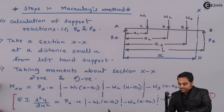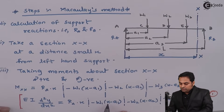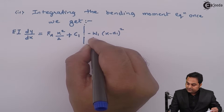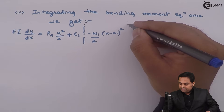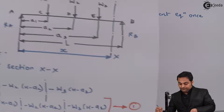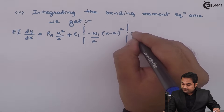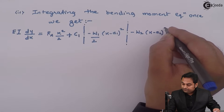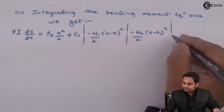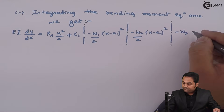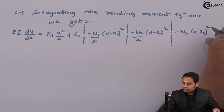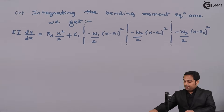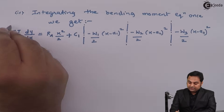The bracket is integrated as a whole: (x minus a1) becomes (x minus a1)² divided by 2. Then minus W2 remains as is and (x minus a2) becomes (x minus a2)² divided by 2. Finally, minus W3 and (x minus a3) becomes (x minus a3)² divided by 2.